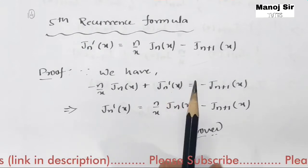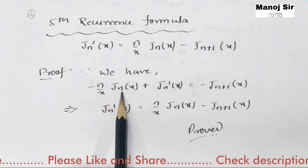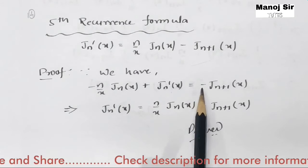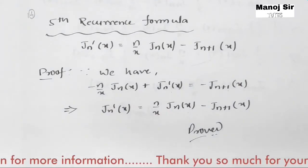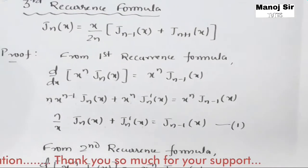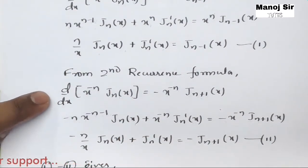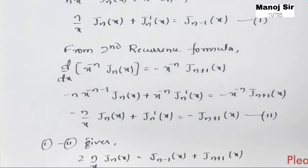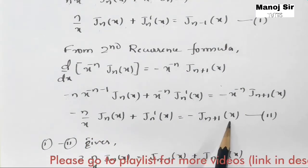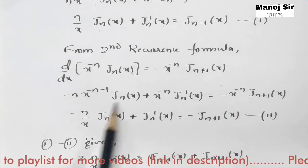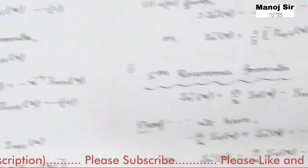To prove this, we take the help of an equation we have already derived — the third recurrence formula — that is: minus n upon x times jn(x) plus jn'(x) equals minus jn+1(x). We discussed this equation in the third recurrence formula. After solving, we achieved this equation: minus n upon x times jn(x) plus jn'(x) equals minus jn+1(x). We will rearrange this to get the fifth recurrence formula.